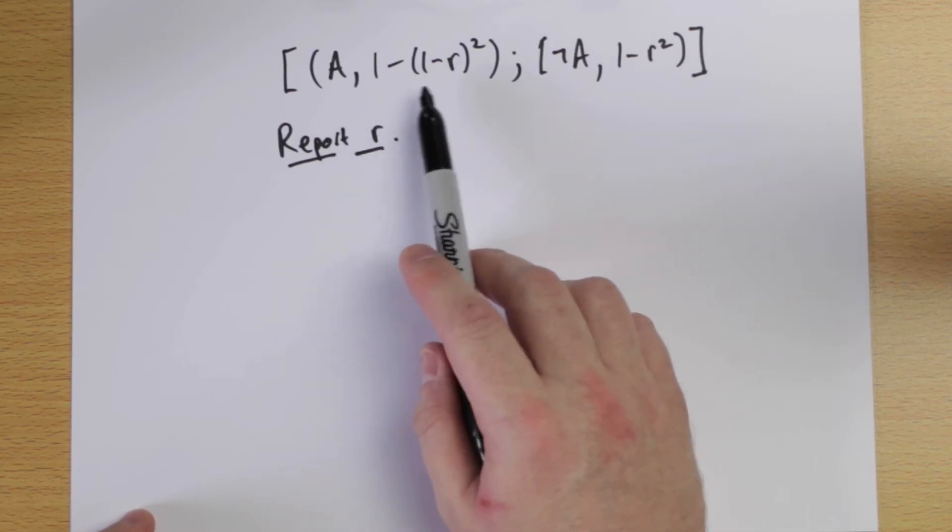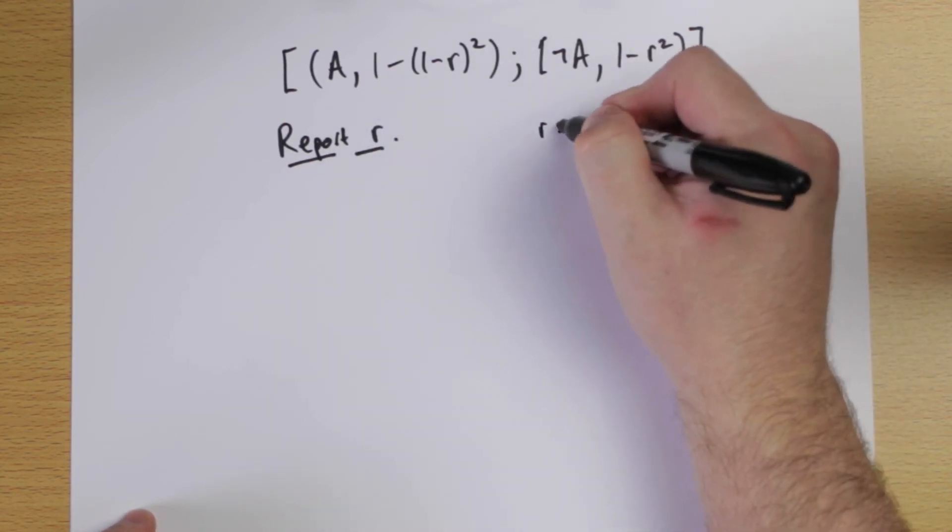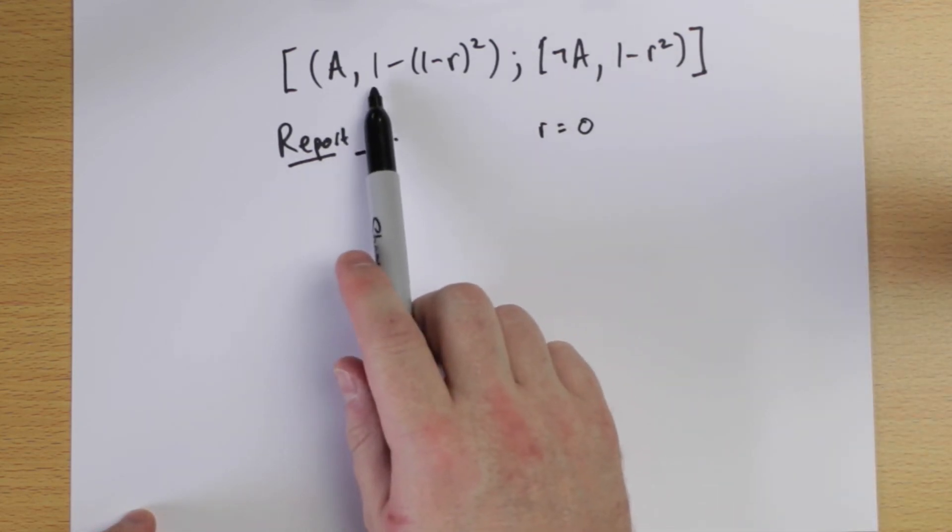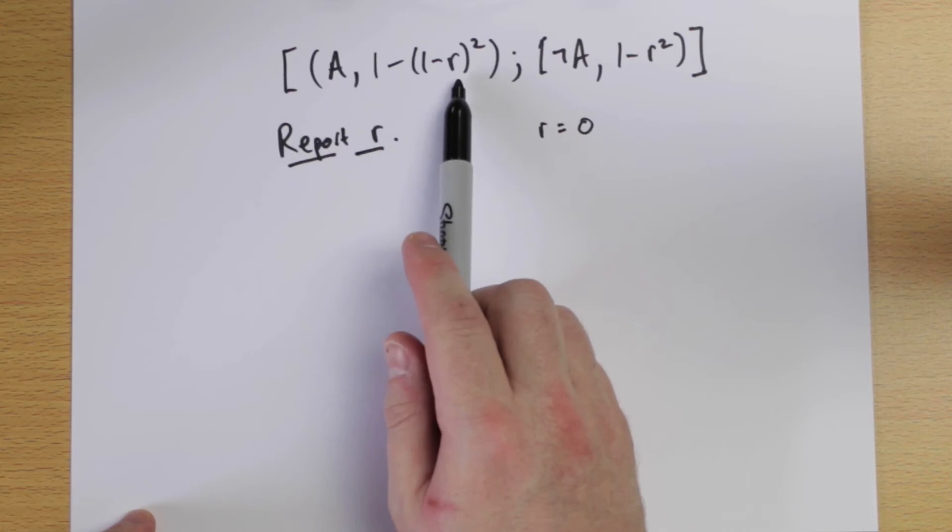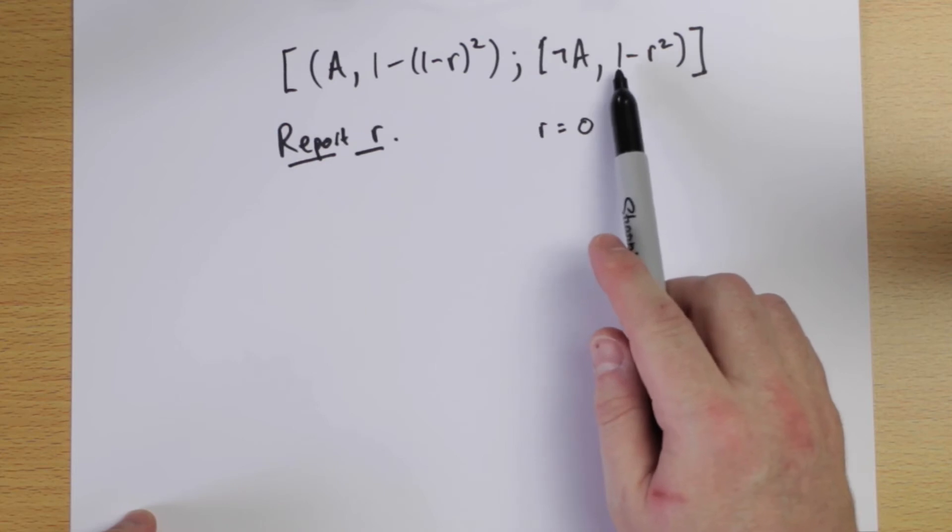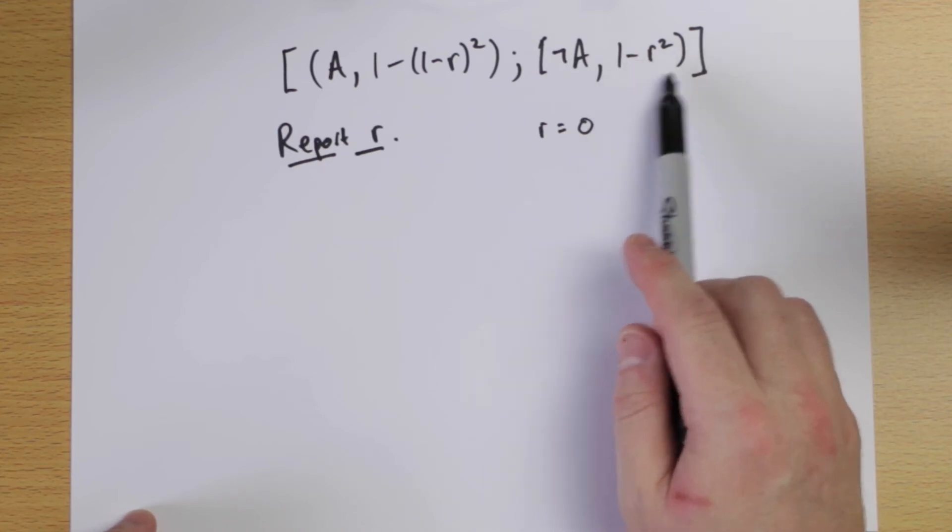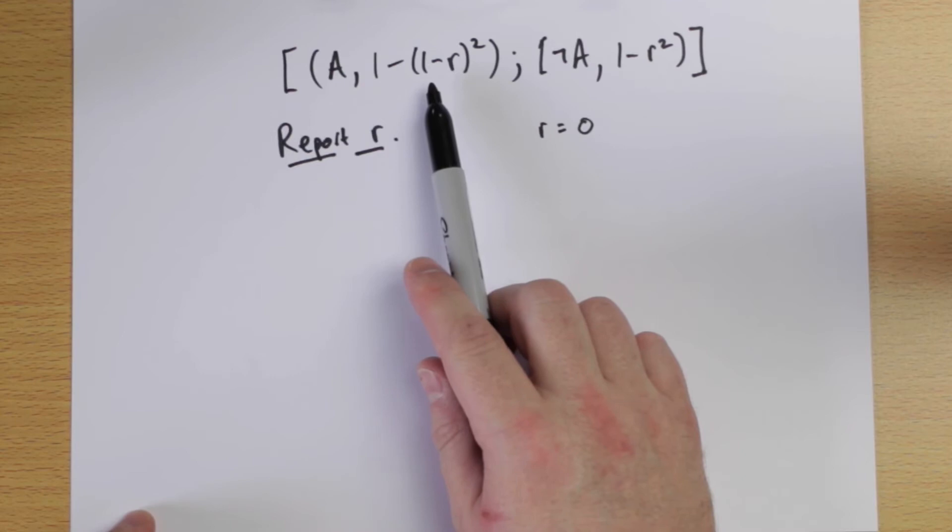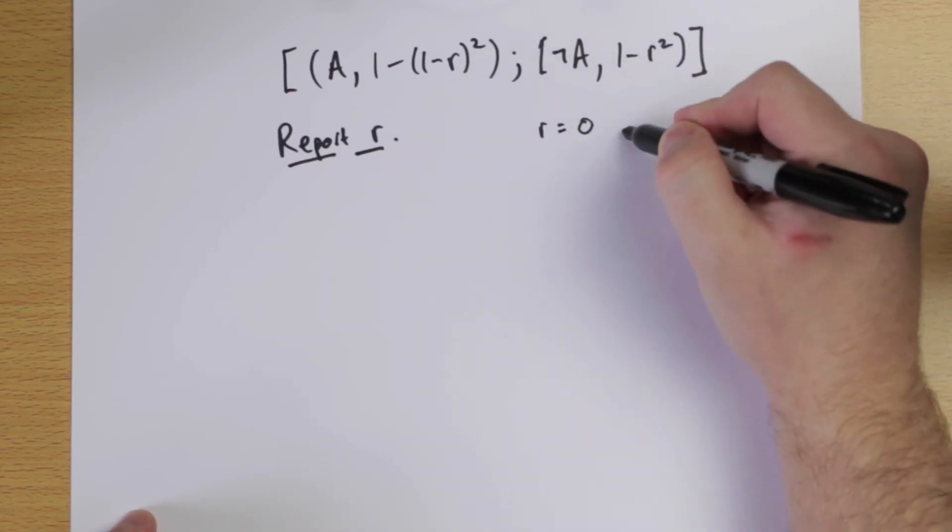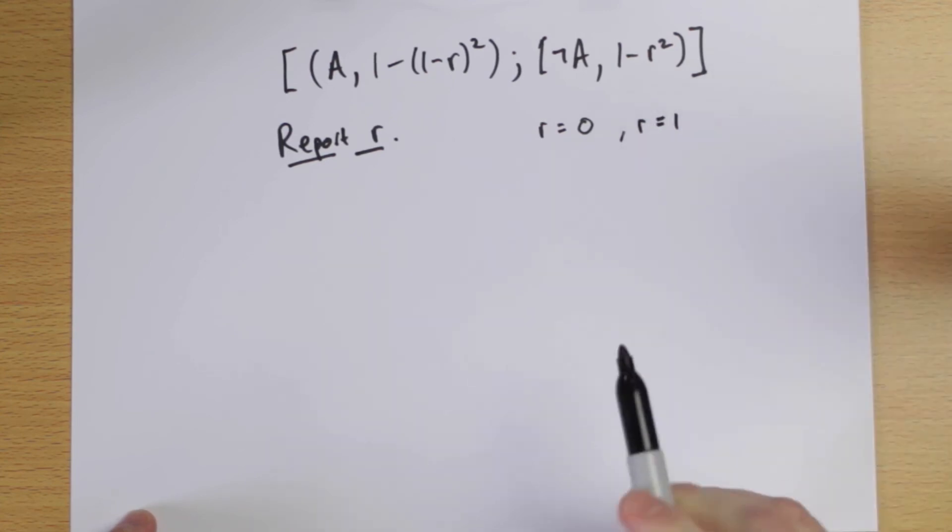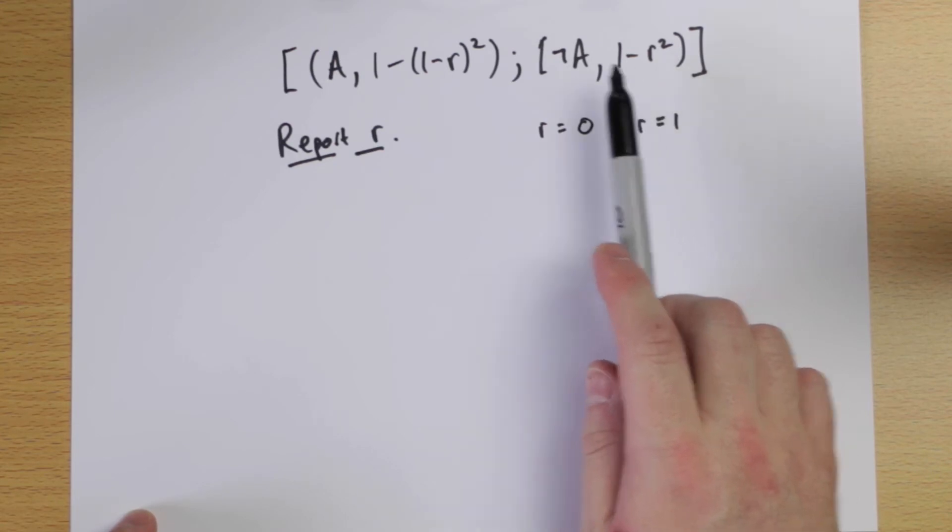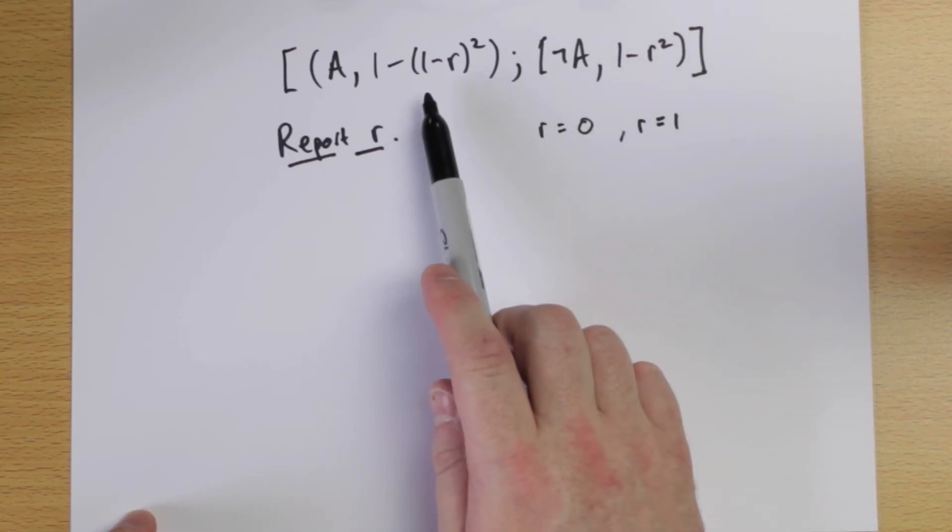So let's have a look at this a second. If I imagine that R equals 0, okay? Then what am I doing? Well, then this payment would be 1 minus, then 1 minus 0 here. So 1 minus 1. This payment would be 0 and this payment would be 1 minus 0 would be 1. So I'd get 0 if the event happens. I'd get 1 if it doesn't happen. Okay? If I said R equals 1, then it's the other way around. I'd get 0 if the event doesn't happen, but I'd get 1 if it does happen. Okay?